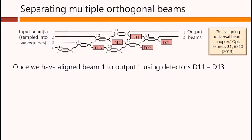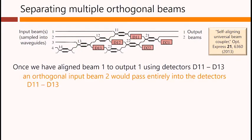Once we have aligned beam 1 to output 1 using detectors D11 to D13, that is, these detectors here working with this diagonal line of Mach-Zehnders, an orthogonal input beam 2 would pass entirely into the detectors D11 to D13. None of it would appear at the output. That is, if at the input, instead of the vector of amplitudes we originally shone in, if we shone in a vector of amplitudes that was mathematically orthogonal to the first one, none of it would appear out here.